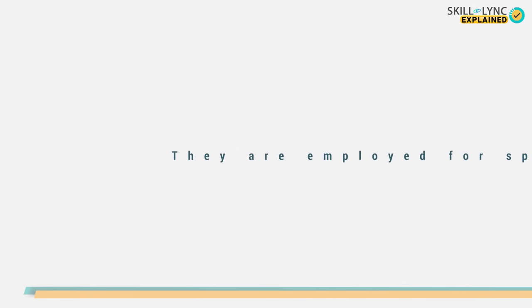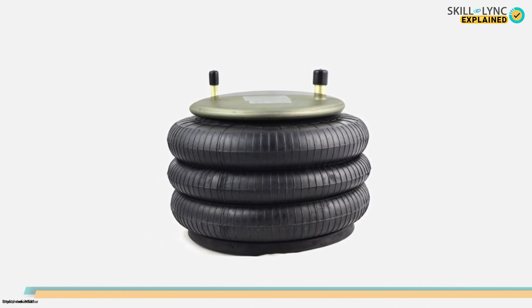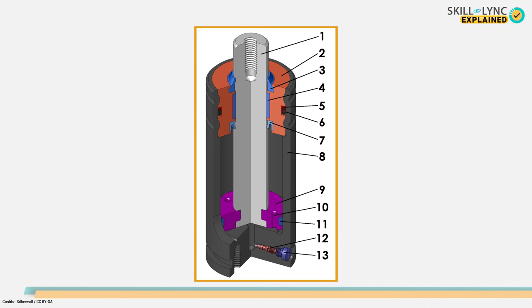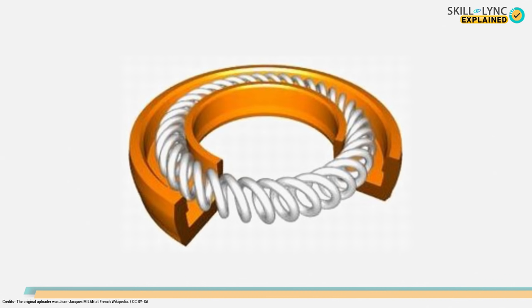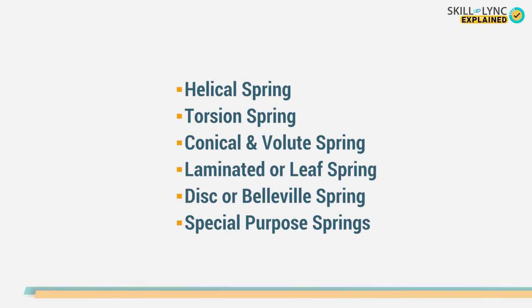Finally, we have special purpose springs. These springs are not widely used but are employed for a specific purpose. Under this category we have air springs, used in vehicle suspension systems; gas springs, used to damp forces and return kinetic energy; and garter springs, used in oil seals and electric connectors. That's all about the various types of springs.